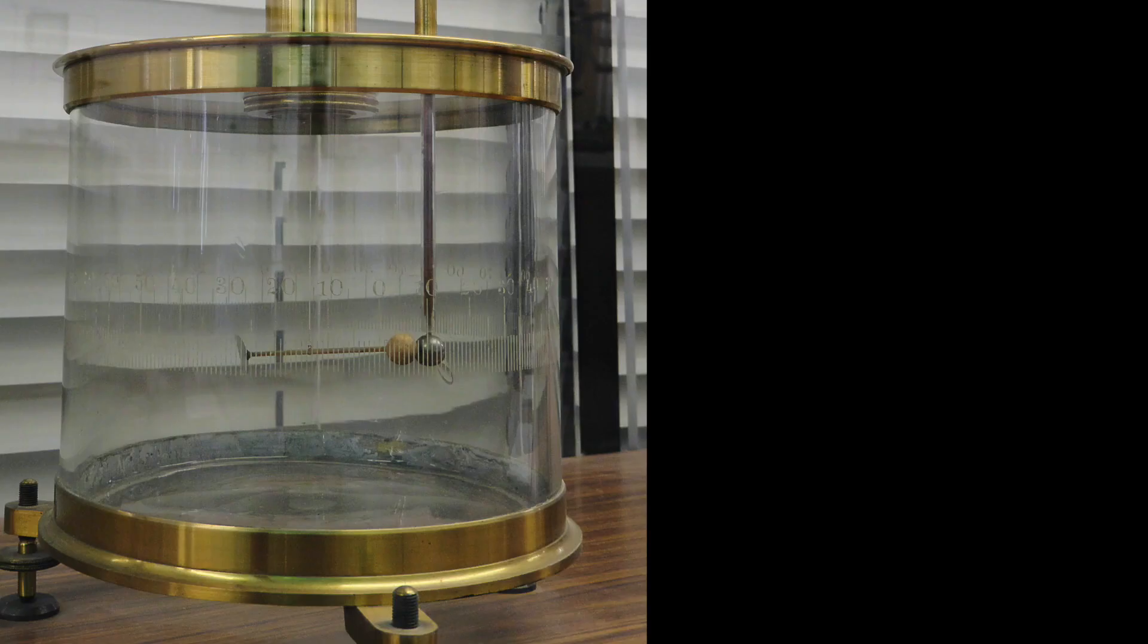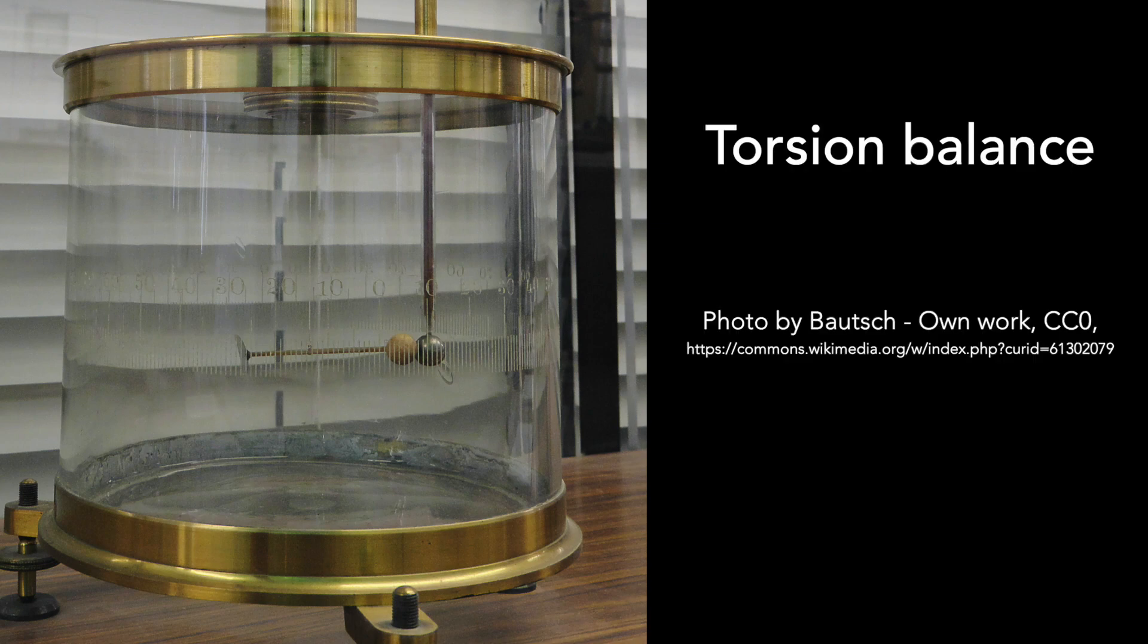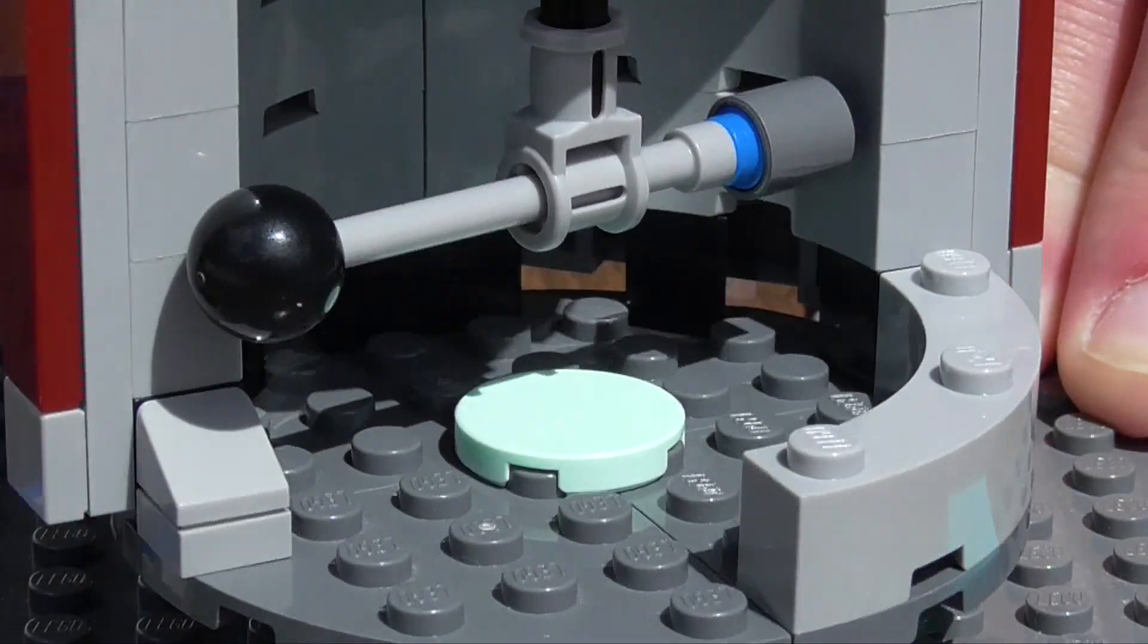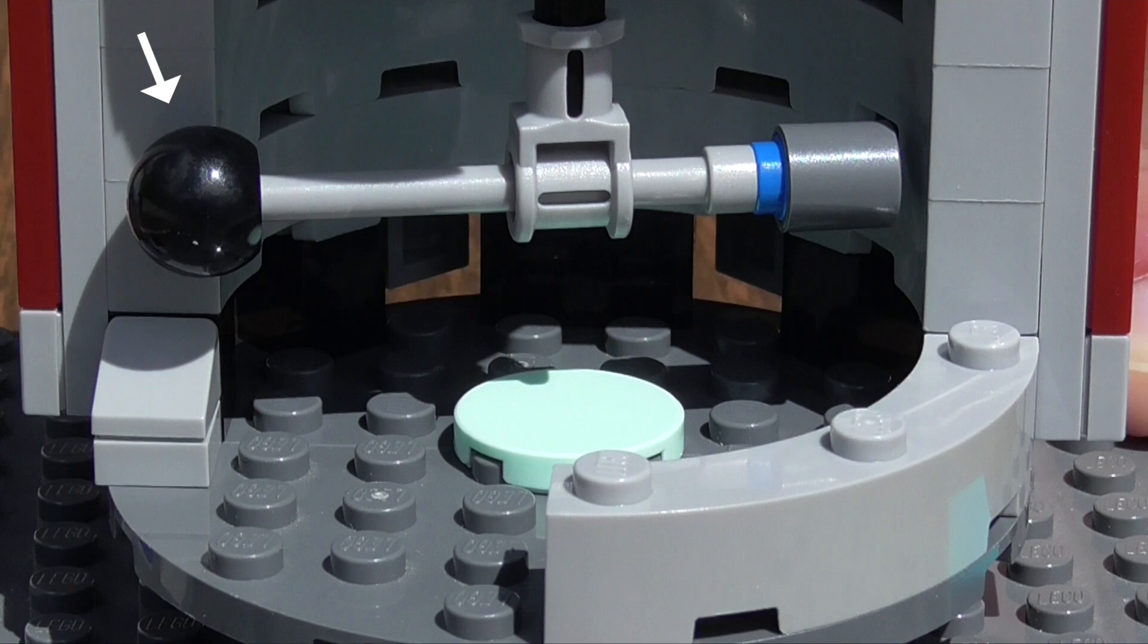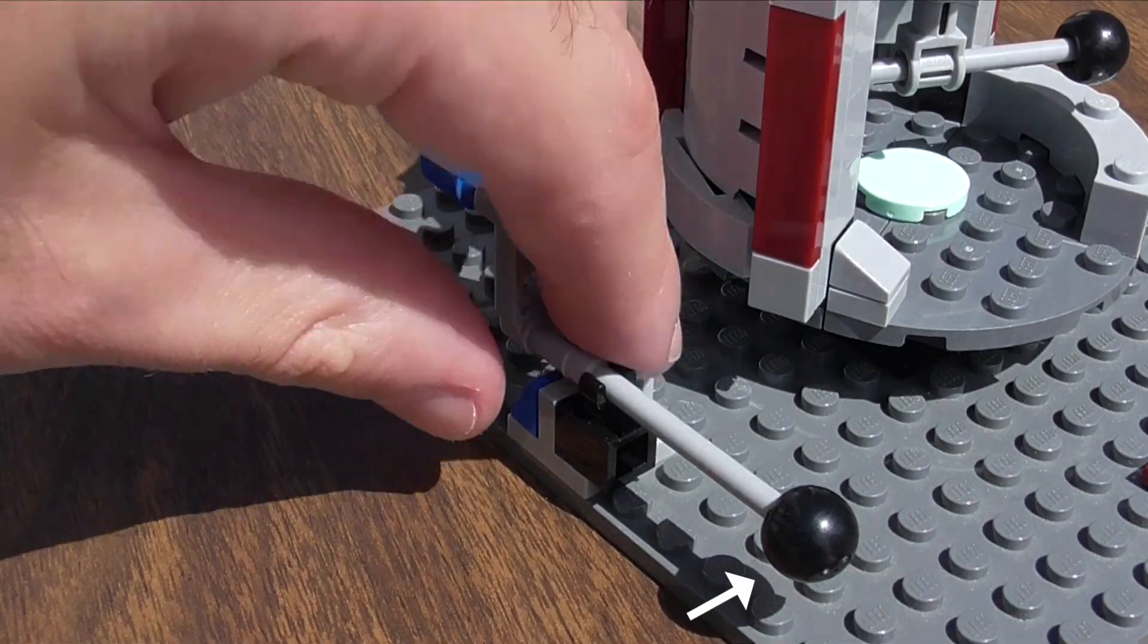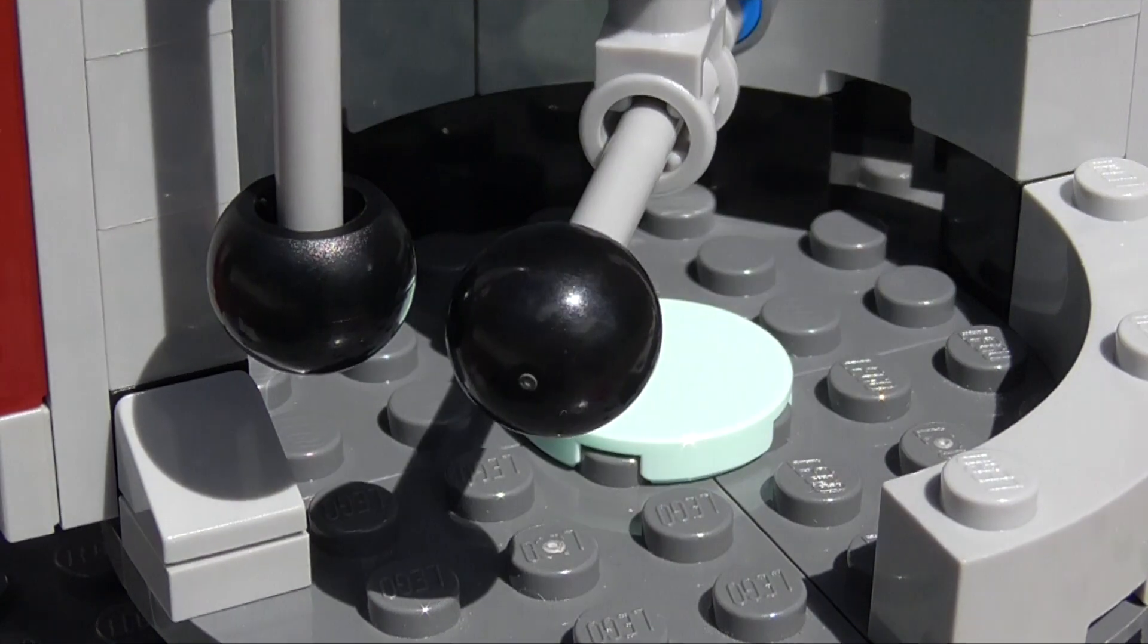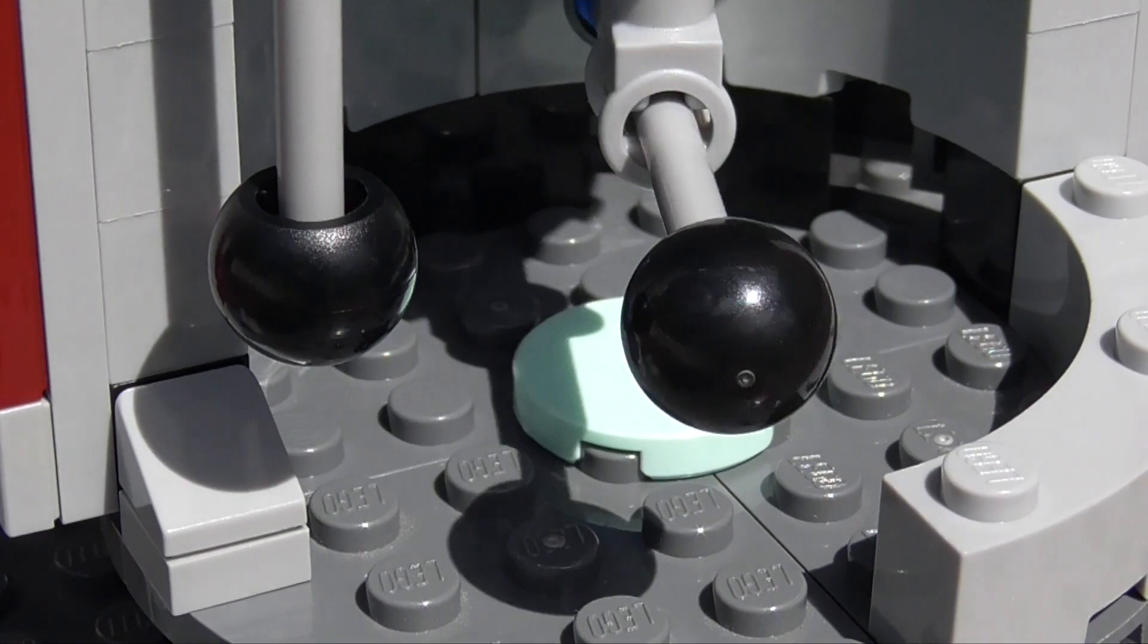Within those three papers, he detailed an experiment involving a torsion balance, which is a kind of very weak spring. The torsion balance held a rod with an electrically charged sphere at one end. By charging another sphere and holding it near the rod, Coulomb could get the first sphere to move and the rod to rotate.